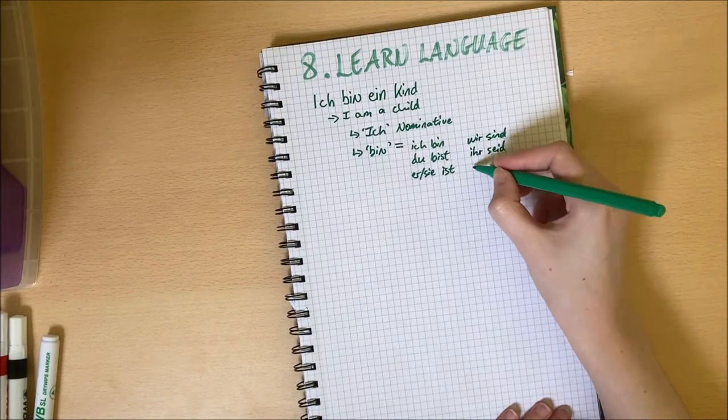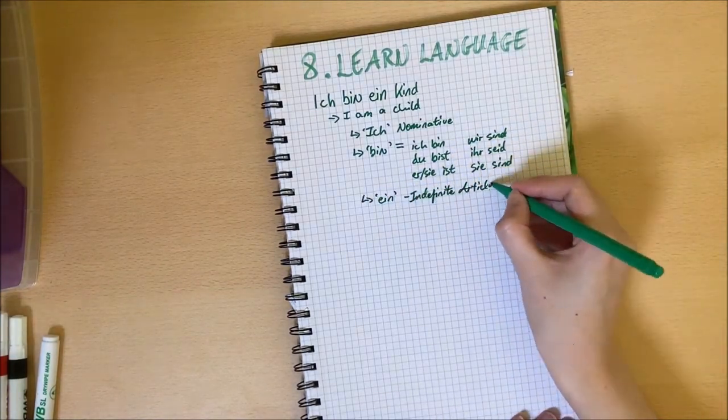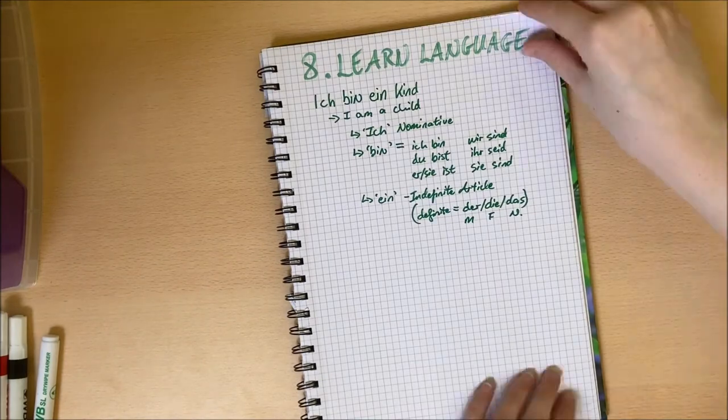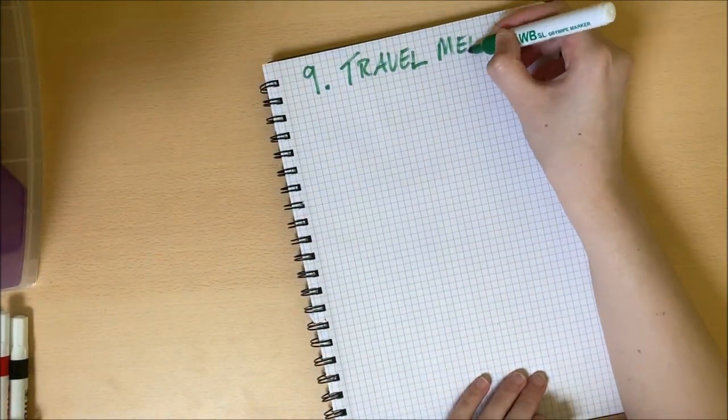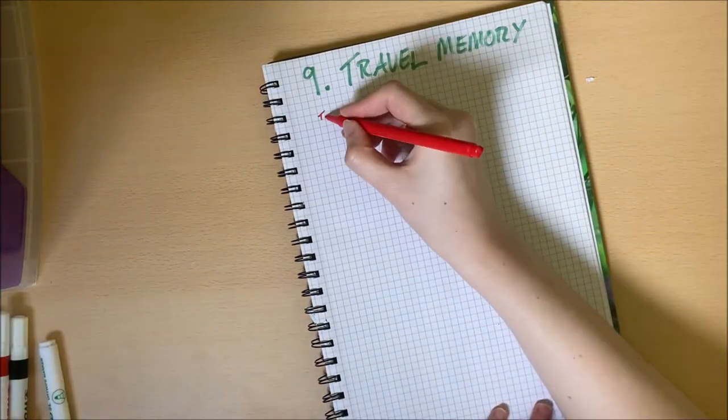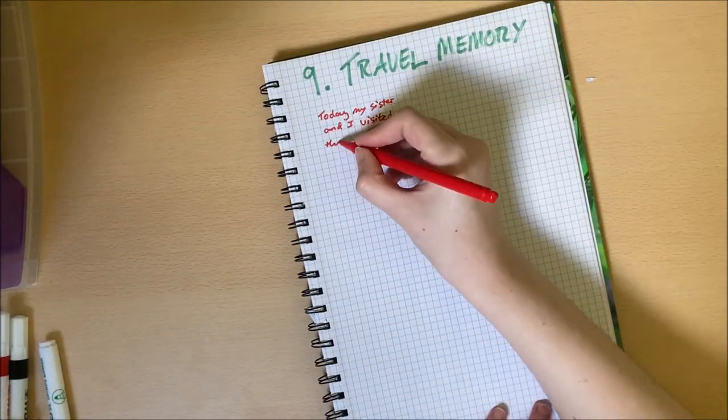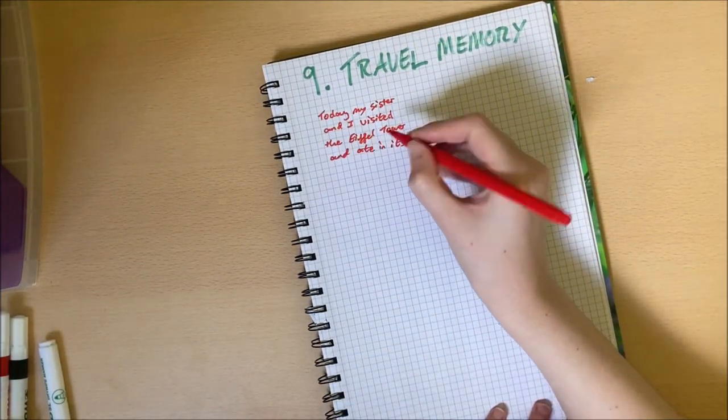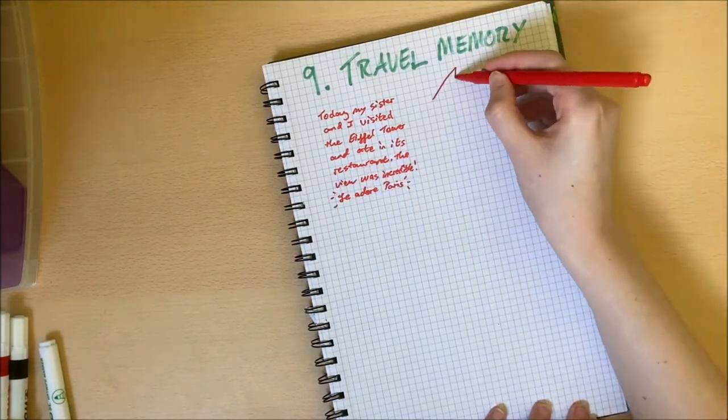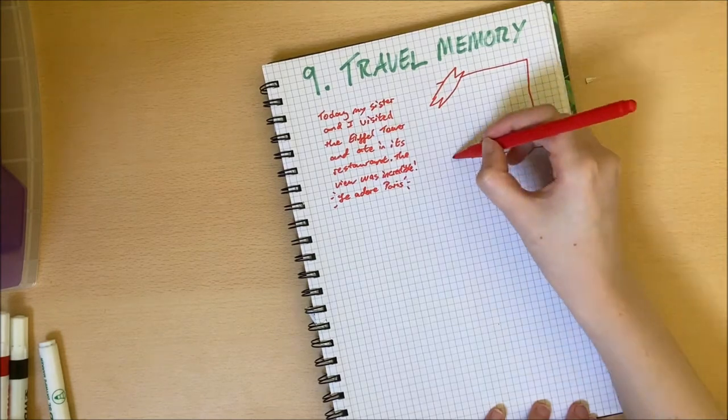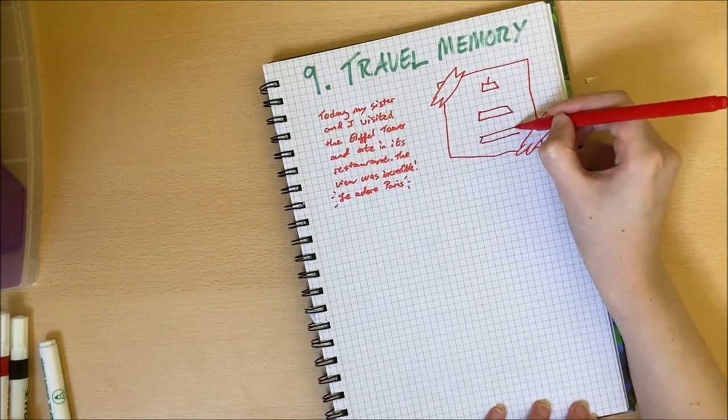Idea number nine is to use the paper as a way to remember where you've traveled and who you were with. Paper is a lot easier to carry abroad than an entire notebook and this way you can keep track of everything you saw and did. You can include photos or drawings or whatever you like.